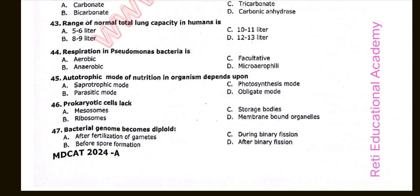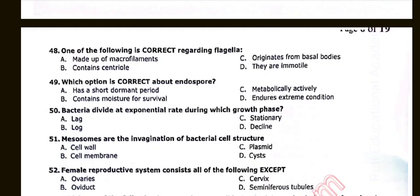Question number forty-seven: Bacterial genome becomes diploid during binary fission. Option C is correct. Question number forty-eight: One of the following is correct regarding flagella. The correct option is C: Contains centriole. Question number forty-nine: Which option is correct about endospore? The correct option is D: Endures extreme conditions. Question number fifty: Bacteria divide at an exponential rate during which growth phase? Option B is correct: Log phase. Question number fifty-one: Mesosomes are the invagination of bacterial cell structure. The correct option is B: Cell membrane.